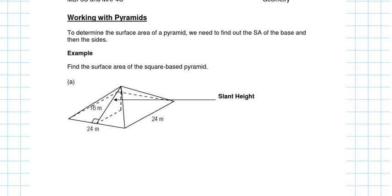If we're looking at this shape and I have four equal sides, that means I'm going to have four equal triangles for my face. If I had a rectangular base, I'd end up with two of the same triangle and two other triangles that are the same, because the base of each triangle would change.